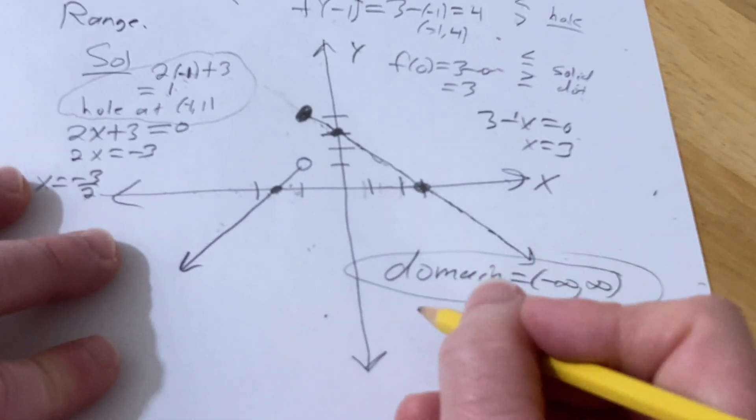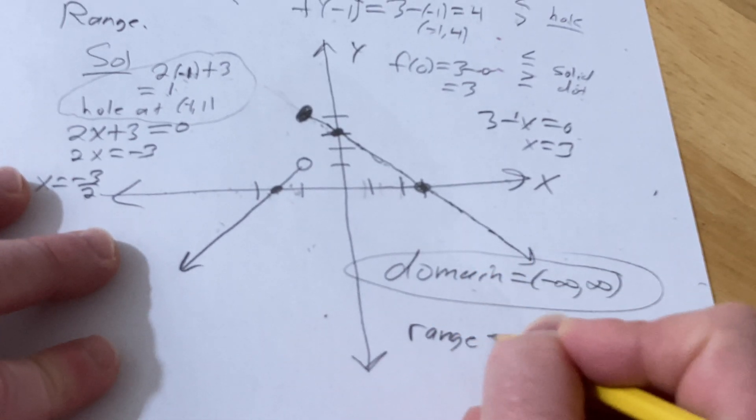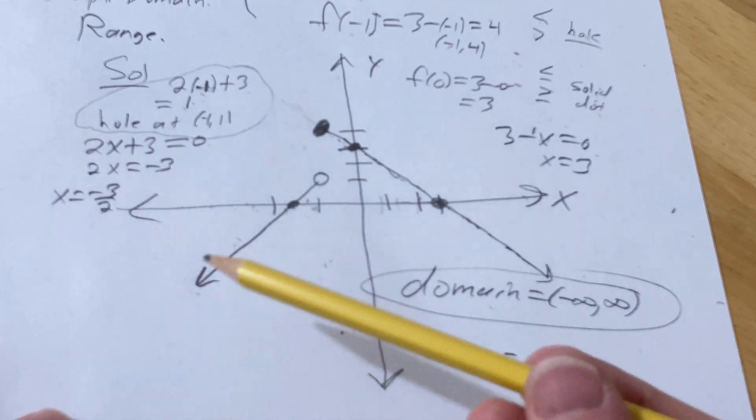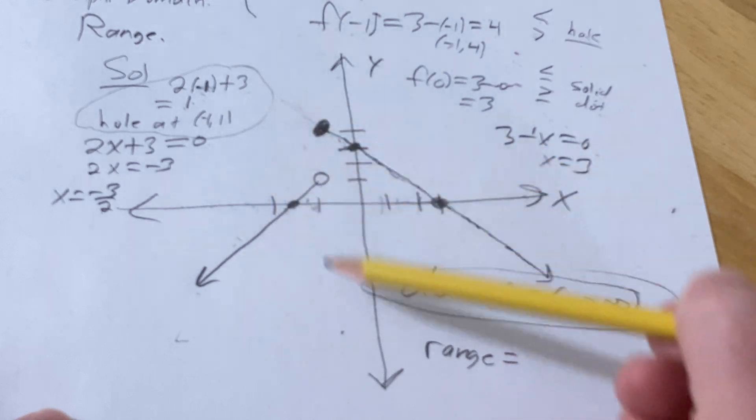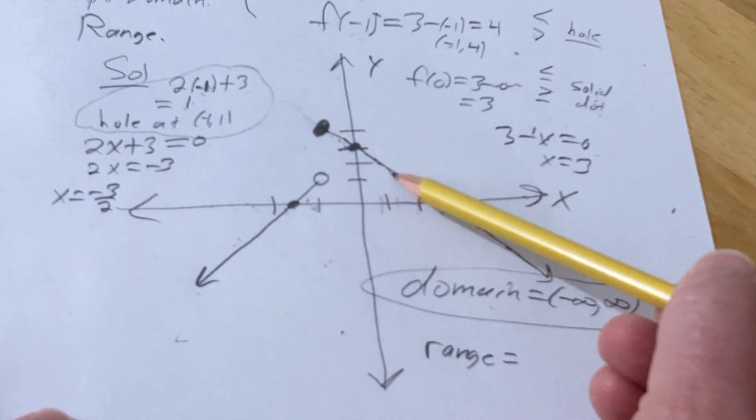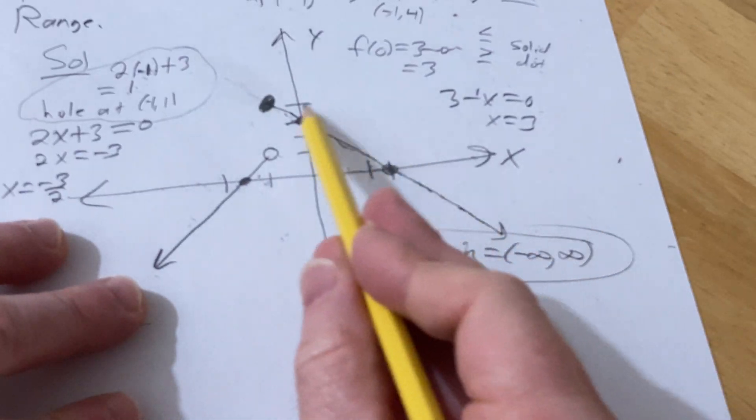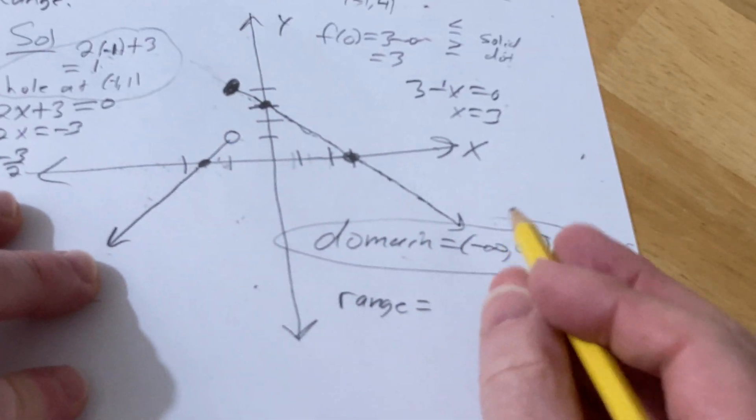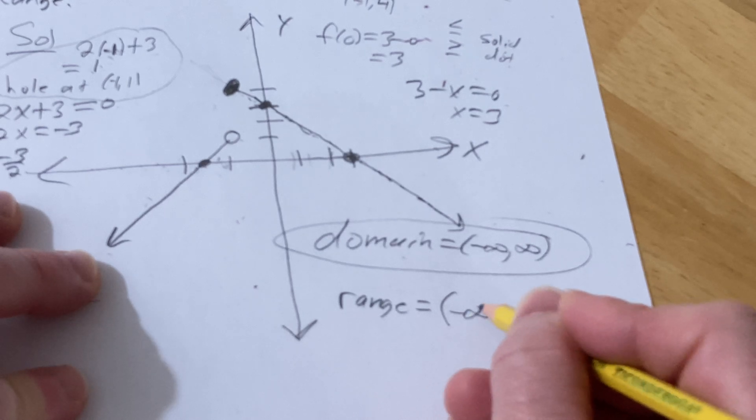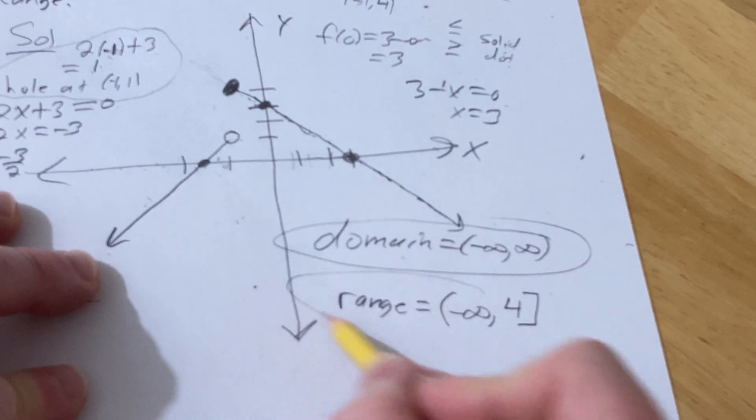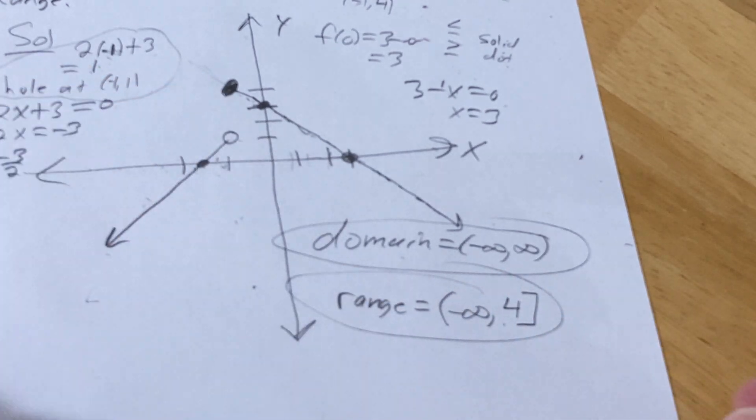As far as the range, though, so the range is all the possible y-values. So this goes down forever, so it would be negative infinity all the way to, it even includes these y-values, right, because there's a y-value here, even if there's a hole, all the way to 4. And you include the 4, because it's solid, filled in hole. It would be negative infinity to 4, and you include it, so you use a bracket. If it was an open circle here or a hole, you would use a parenthesis.